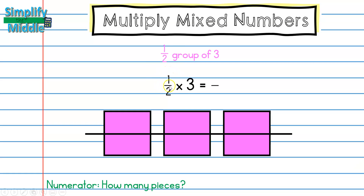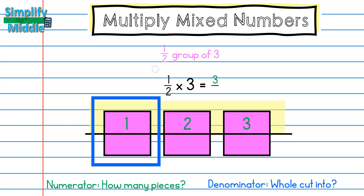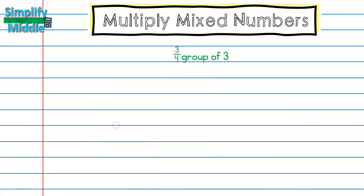This numerator is going to tell me how many rows to look at, so I'm just looking at the top row. I count a total of three pieces. For my denominator, I'm asking what has my whole been cut into, and I can see it was cut into two pieces. So my answer is three-halves, or one and a half.